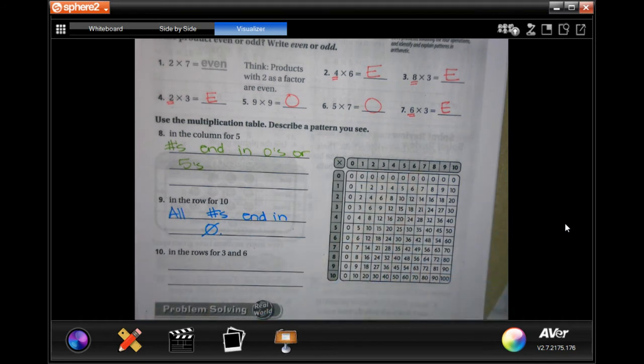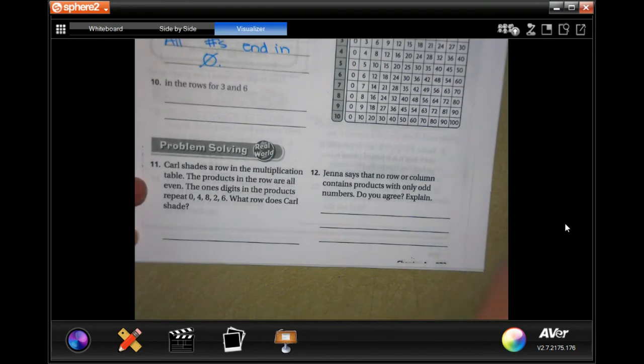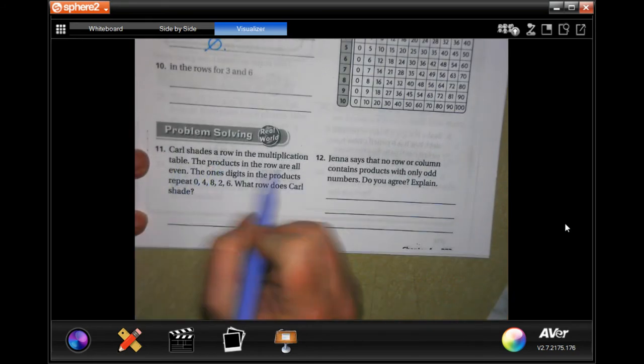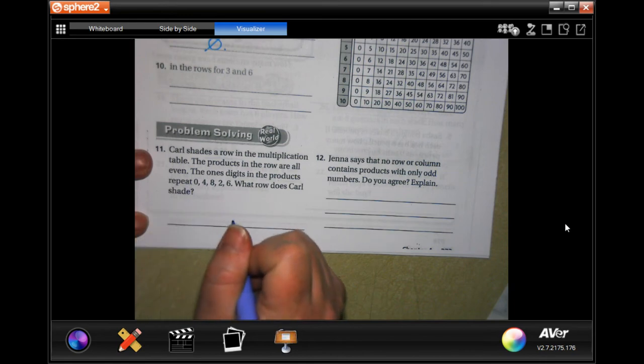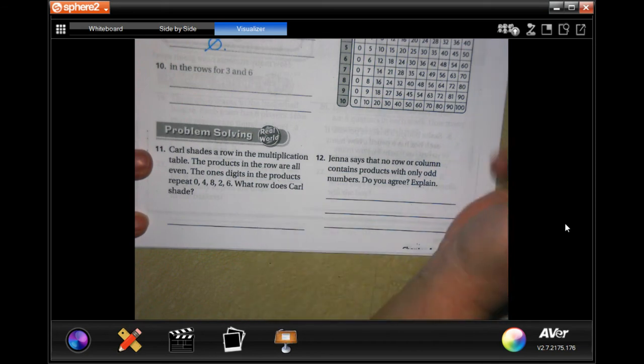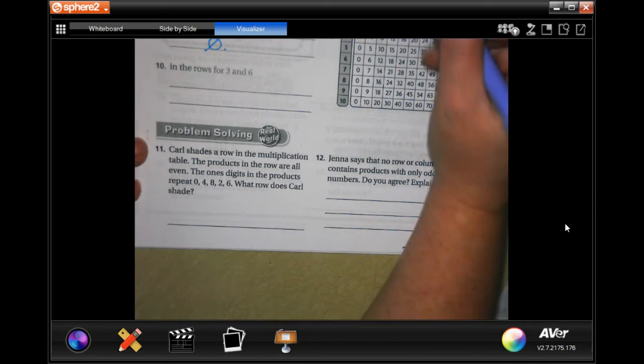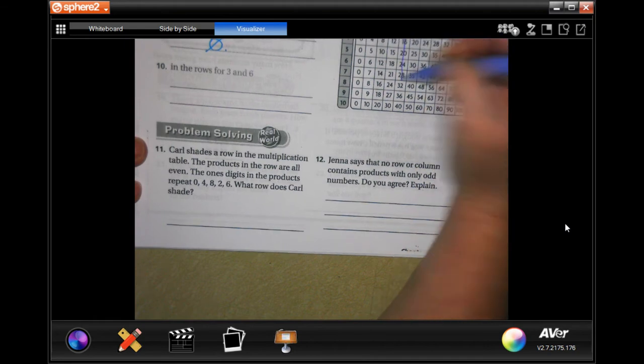We're going to go down to number 11. It's going to be: Carl shades a row in the multiplication table. The products in the row are all even numbers. The one digit in the product repeat zero, four, eight, two, six. What row does Carl shade? So let's go from zero to four, can't be anything under four. So zero, four, eight, two, six - looks like you went down the fours column.